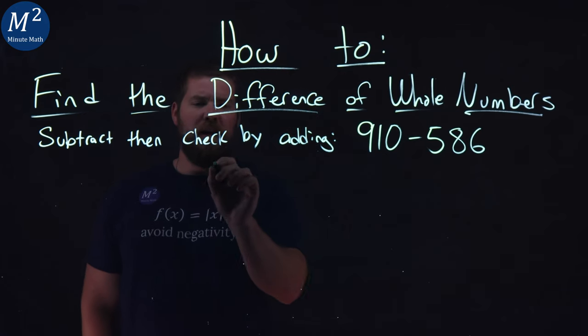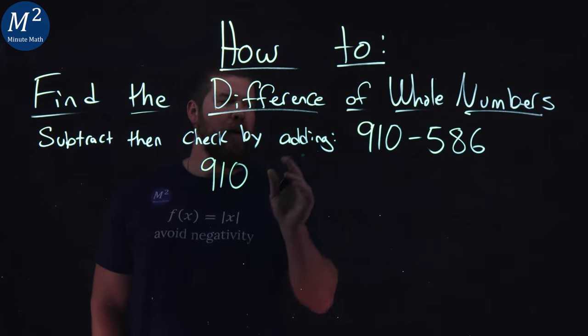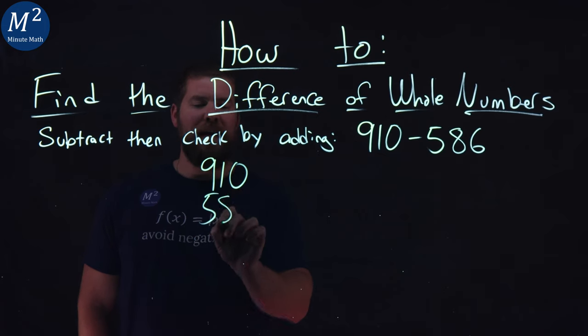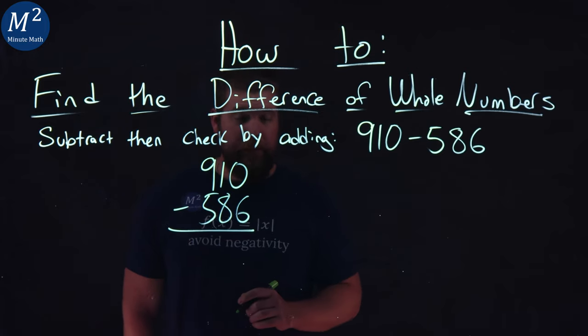I'm going to write this 910 first, and right underneath it, I'm going to write 586, making sure all my digits line up, and we're going to subtract them.